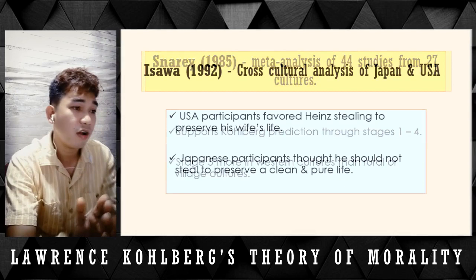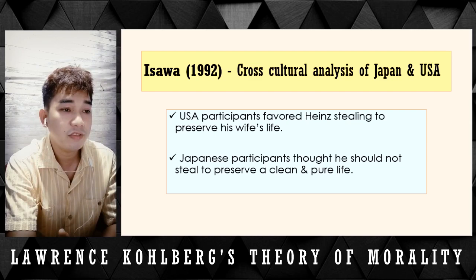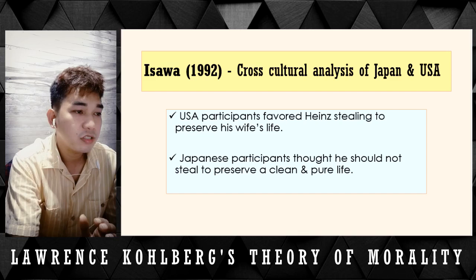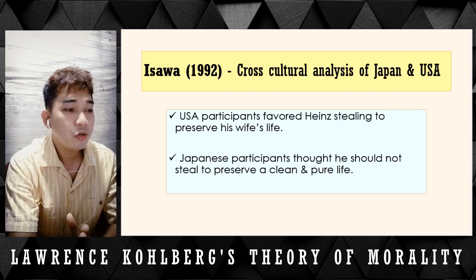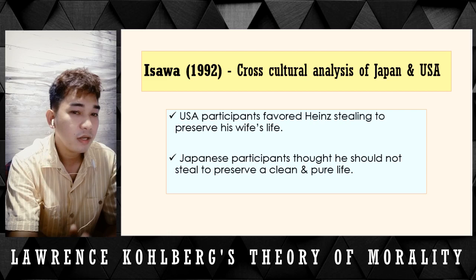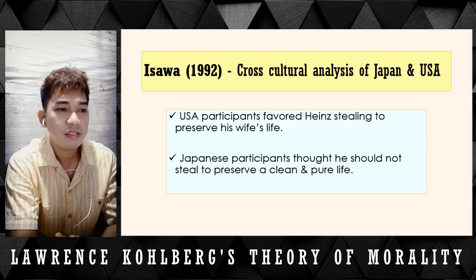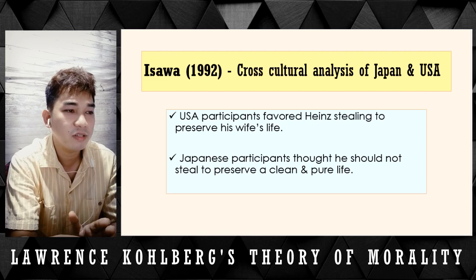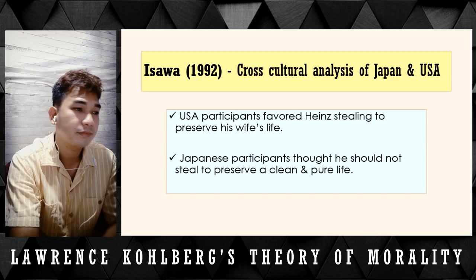Using the same theory, Snarey in 1985 conducted a meta-analysis of 44 studies from 27 cultures. According to Snarey, his findings support Kohlberg's prediction through stages 1 to 4, and stage 5 was found more in western cultures than in rural or village cultures. Another study by Iwasa in 1992 was a cross-cultural analysis of Japan and the USA. USA participants favored Heinz stealing to preserve his wife's life, which was the opposite of Japanese participants, who thought he should not steal in order to preserve a clean and pure life. This is very interesting as Japan and the USA have different cultures and different ideas on the Heinz Dilemma.